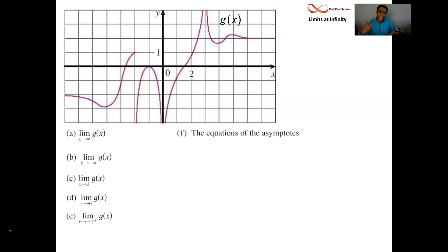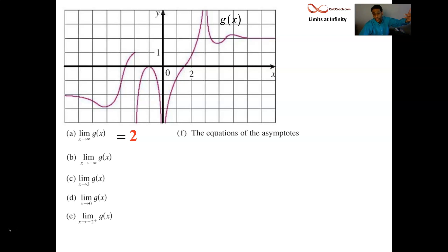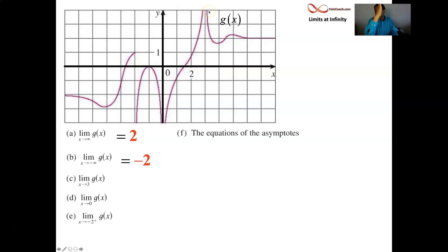First up: what's the limit as x goes to infinity of this function? We only have this grid here, but we assume it continues off to the right. Each little grid point is 1 — these are 1-by-1 grids — so that's going to be 2. What about towards minus infinity? Off to the left, it's going to be negative 2. What about as x goes to 3? When there's no indication of left or right, we assume it's from both sides and check if they agree. As we go towards 3 from the right, the function heads off to infinity; from the left, also infinity. They agree.